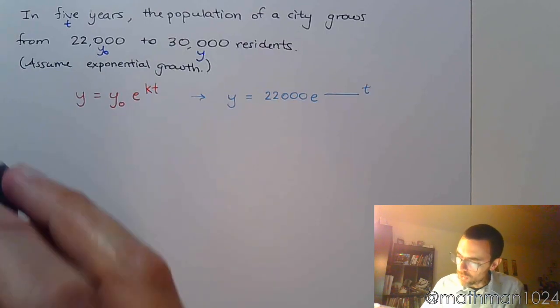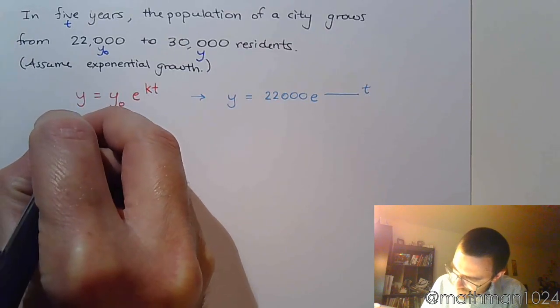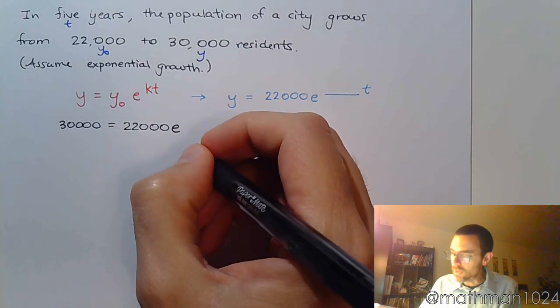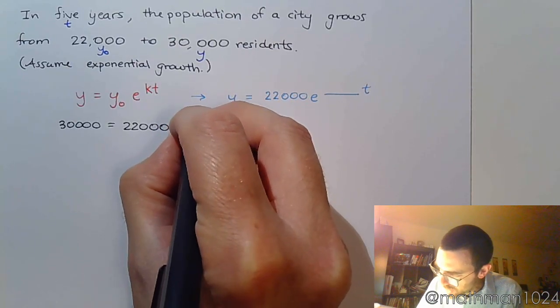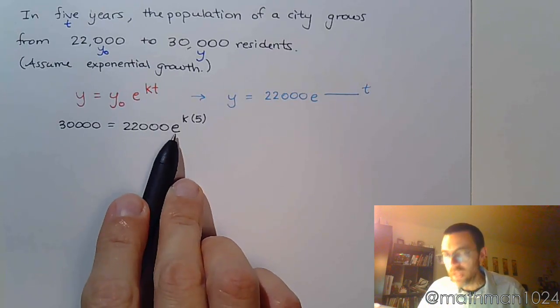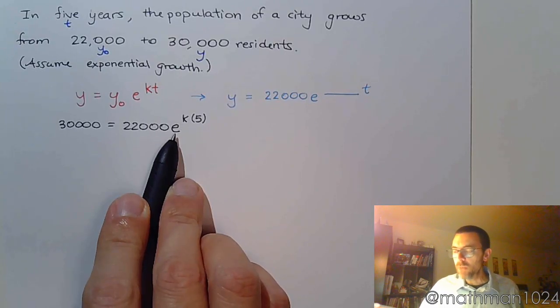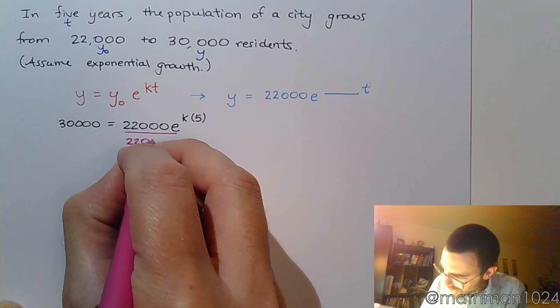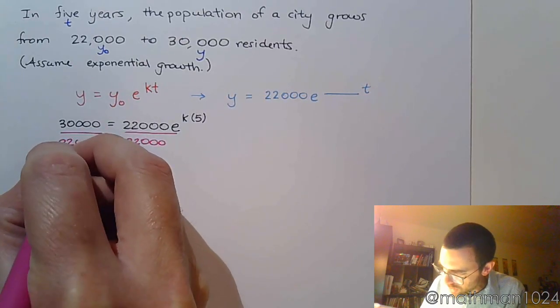They gave us some information at the very beginning that's super useful. They told us the initial value, y naught. They told us the ending value, y, and they told us this happens after a t value of 5. Taking these three pieces of information, we're going to throw them into this formula and come up with what the rate is. I know that I'm ending with 30,000 after starting with 22,000, e, now I don't know what k is, so I'm going to write k, and t is going to be 5 years. Your job here is to solve for k. My first step is to divide both sides of the equation by 22,000.